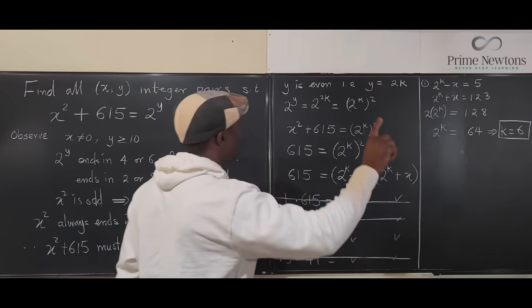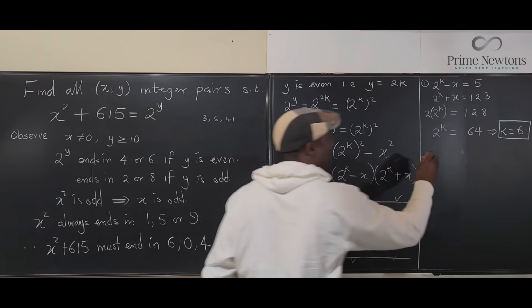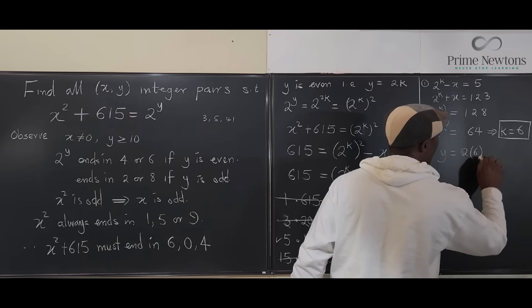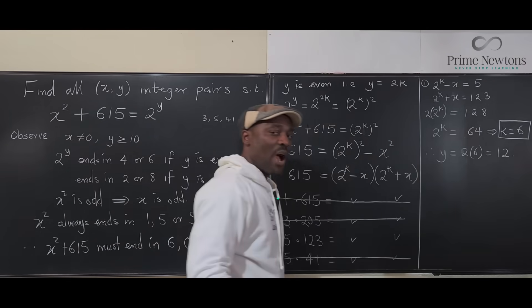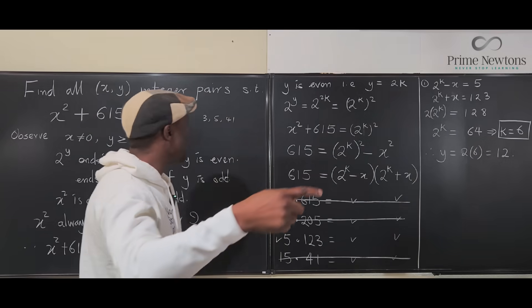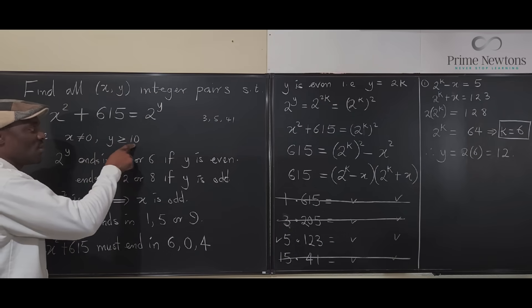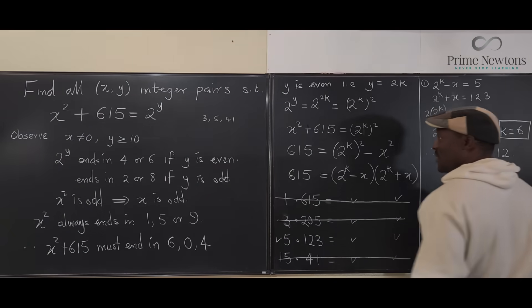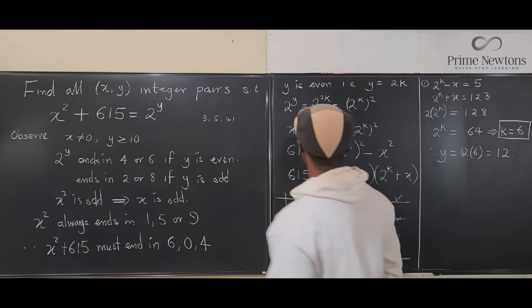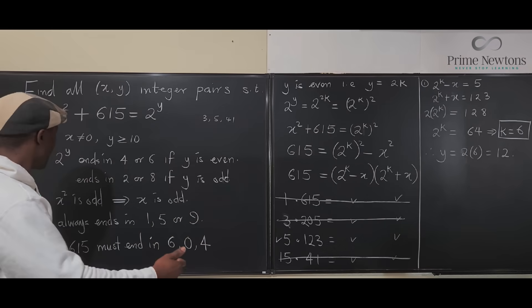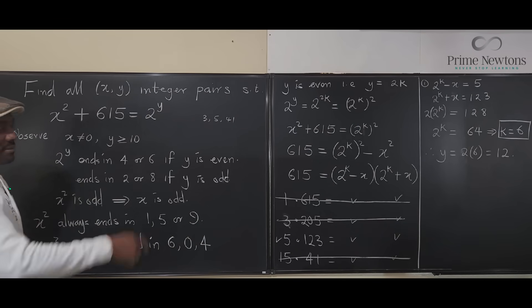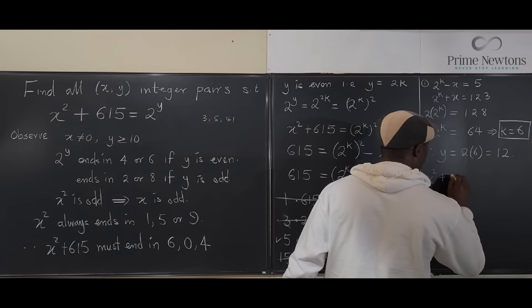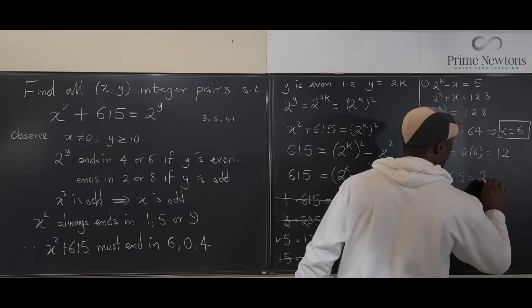And with that, we have found our y. Therefore, y must be 2 times 6, which is equal to 12. Now, does it meet the condition that we set initially? We said y must be greater than or equal to 10. That makes me happy because it is true. Now that y equals 12, we could go back to the equation that we were solving and just solve it here.